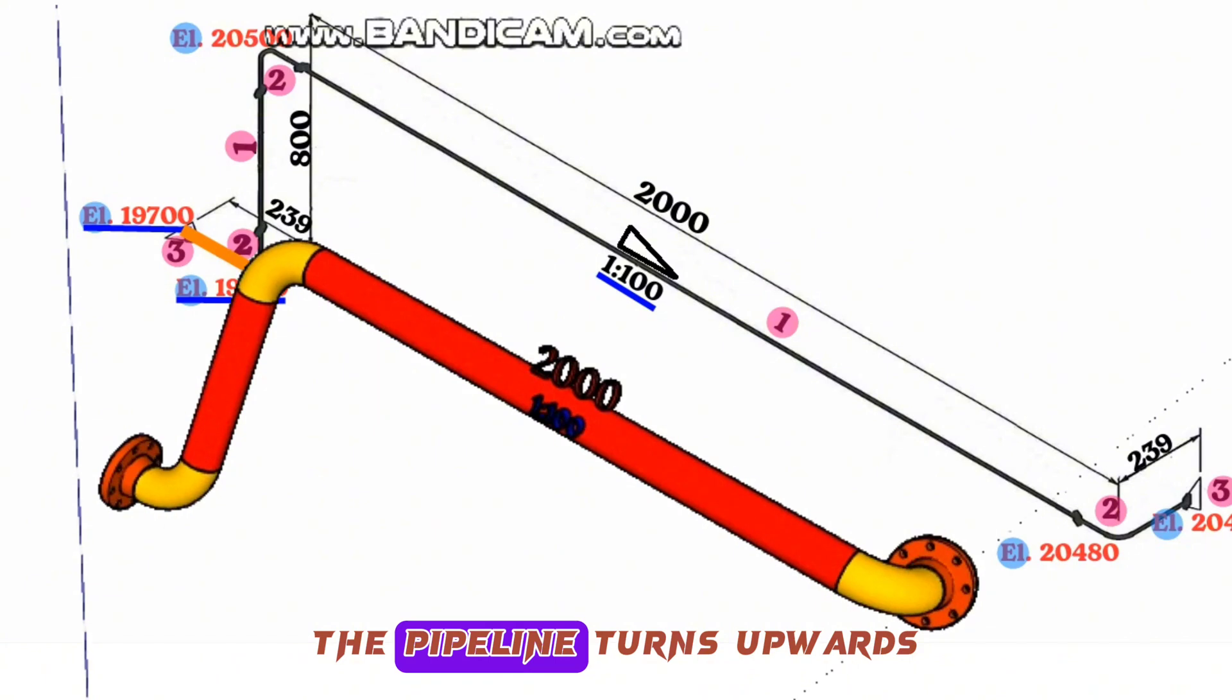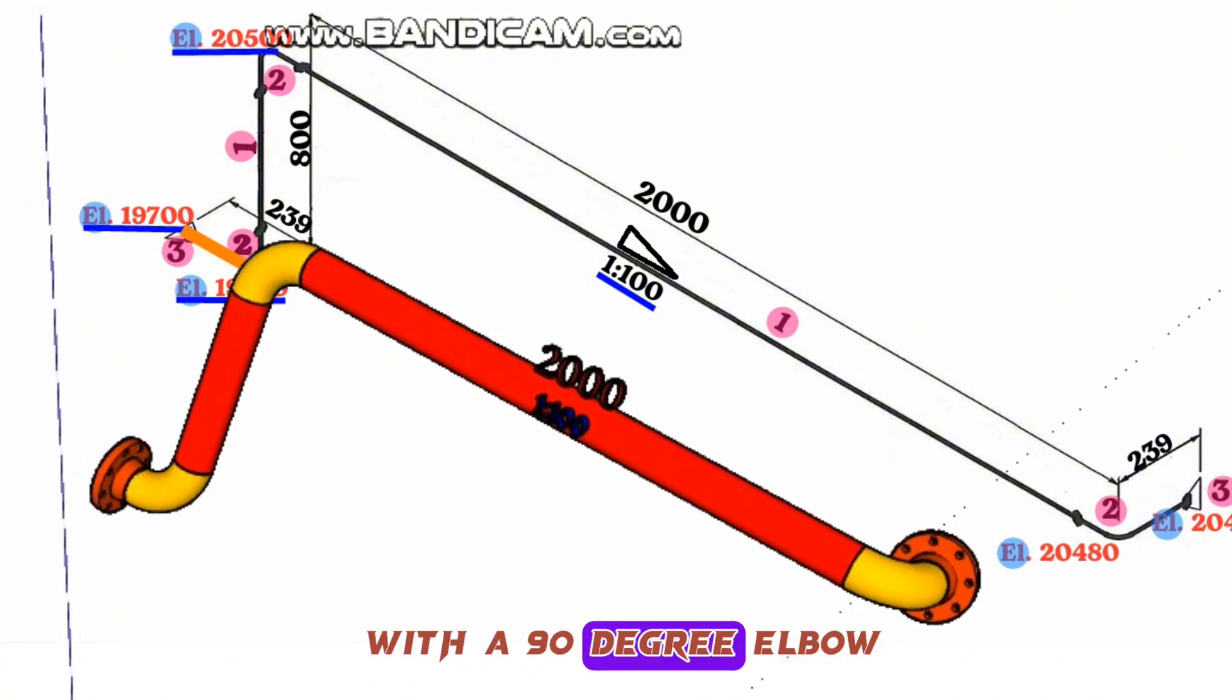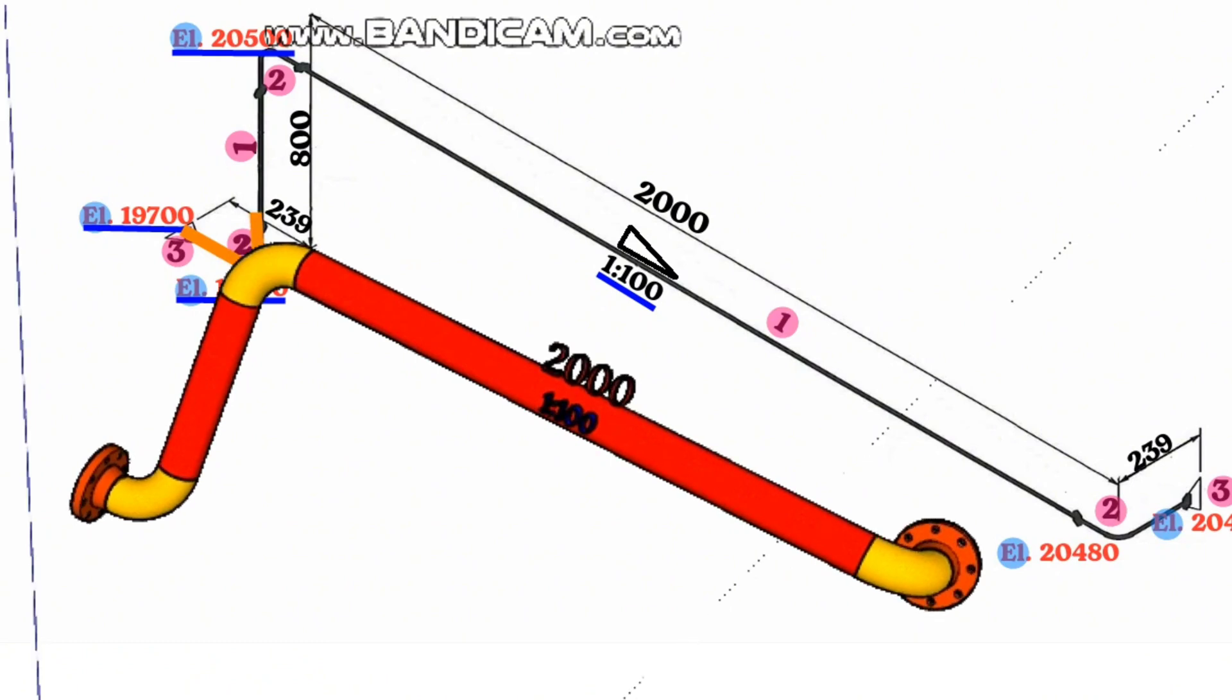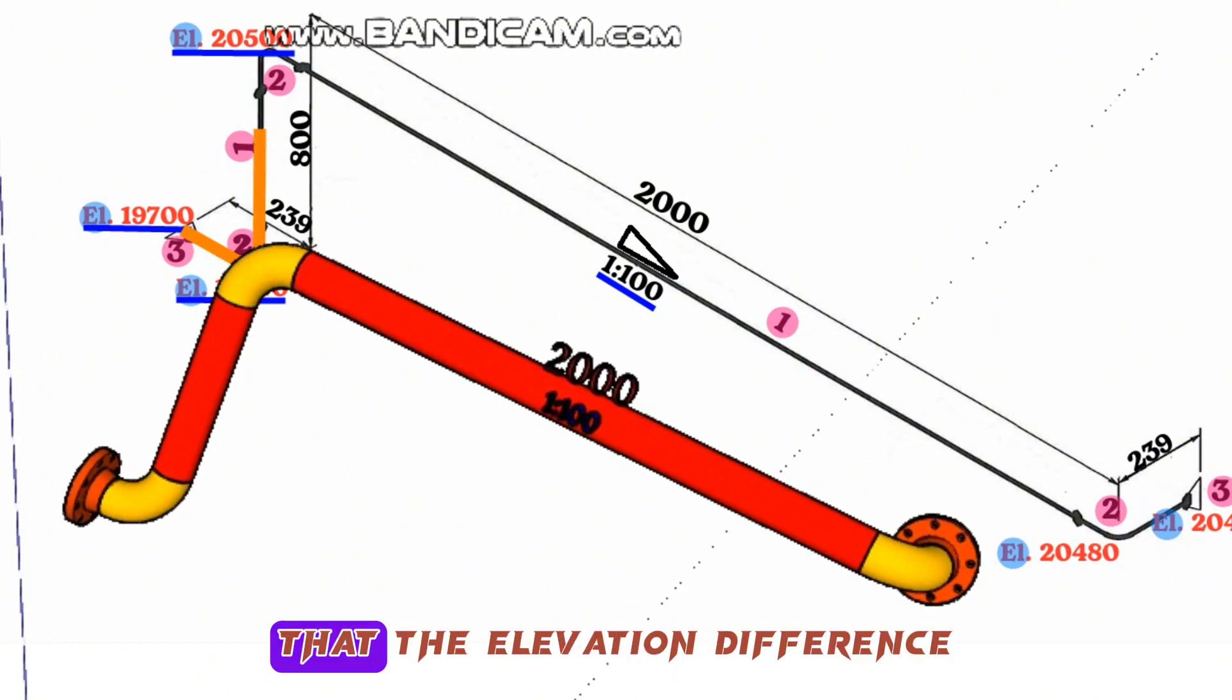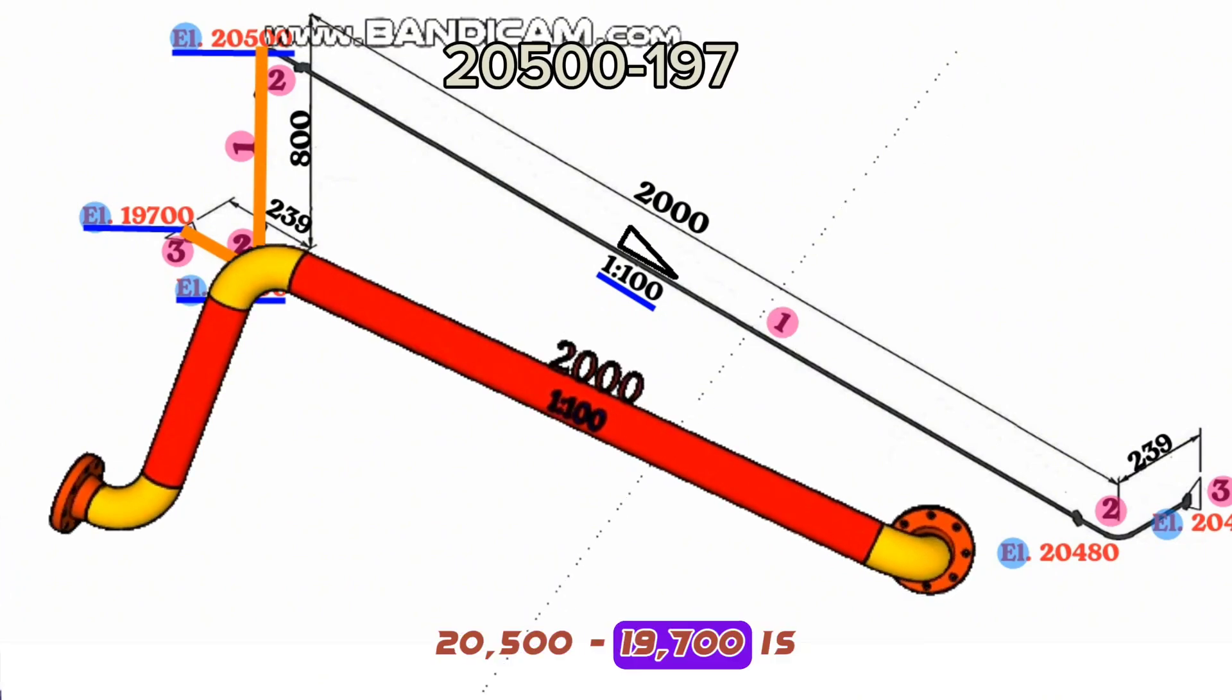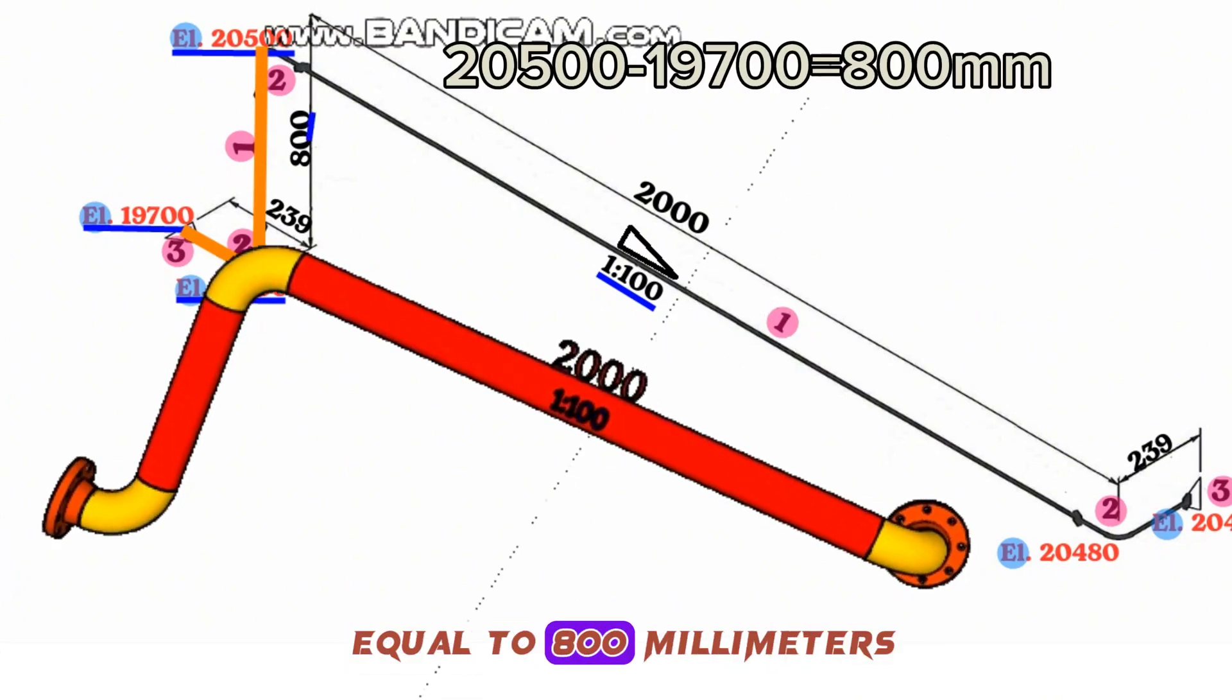At this point, the pipeline turns upwards with a 90-degree elbow and continues for a length of 800 millimeters. Here we can easily see that the elevation difference is 800 millimeters: 20,500 minus 19,700 equals 800 millimeters.